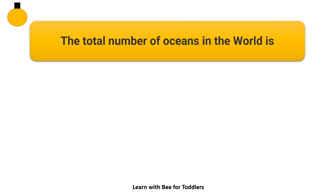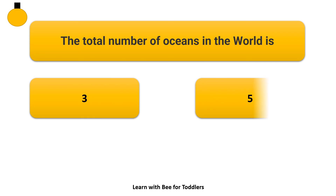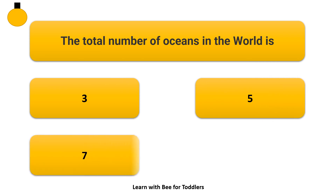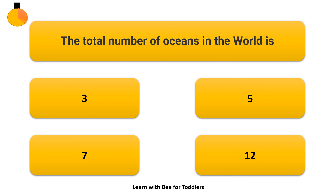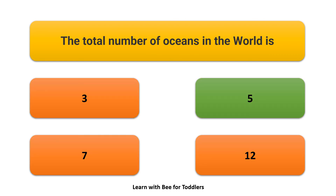The total number of oceans in the world is: 3, 5, 7, or 12. The answer is 5.